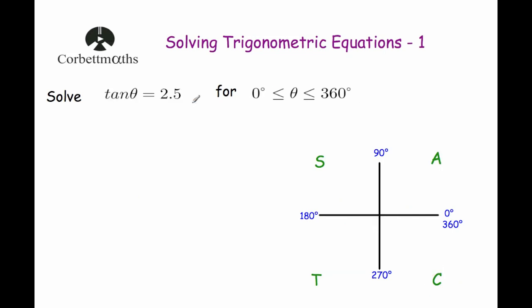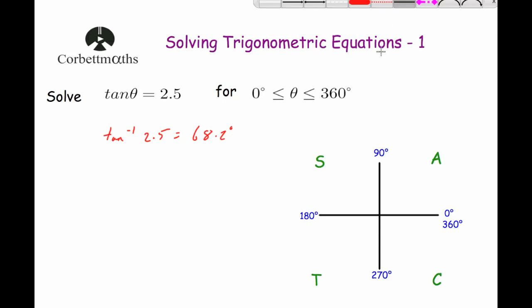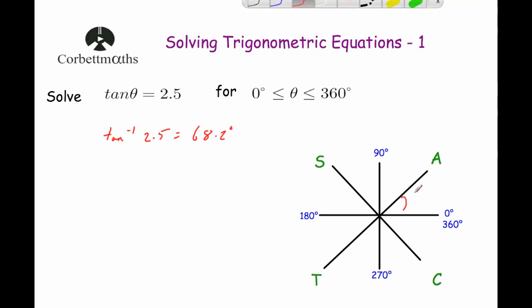Our next question: solve tan θ = 2.5 for angles between 0° and 360°. We work out the inverse tan of 2.5 on our calculator — the arc tan of 2.5 gives an angle of 68.2°. That means our angle in the first quadrant is 68.2°. We mark that in all four quadrants: 68.2° in each.